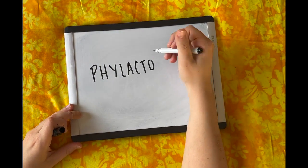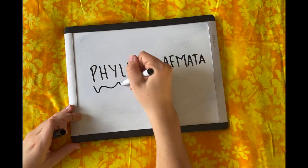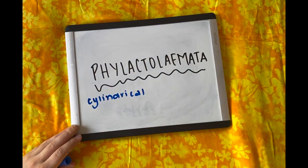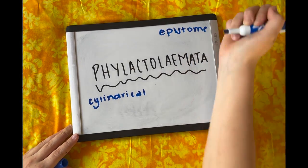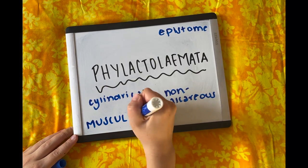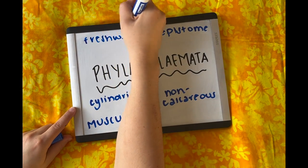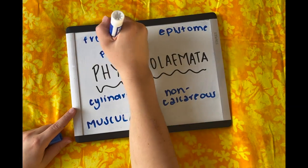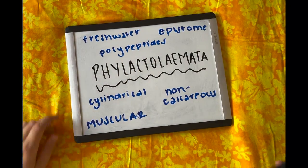The first major group in the Bryozoa taxon is the Phylactolaemata group, which has the following characteristics: they are cylindrical, have an epistome which is a hollow flap found over the skin of the mouth, a non-calcareous and muscular body wall, and live exclusively in freshwater ecosystems and reproduce by replication of polypeptides.